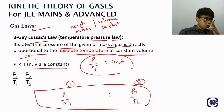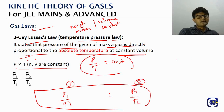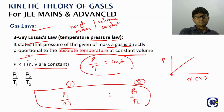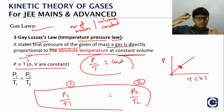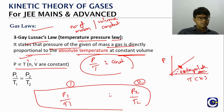We don't need to remember all these relations separately because all gas laws culminate into the ideal gas equation, from which each individual law can be derived. The graphical representation of Gay-Lussac's law is analogous to Charles' law — a straight line through the origin on a P vs T (Kelvin) graph, with extrapolation needed below a certain temperature.